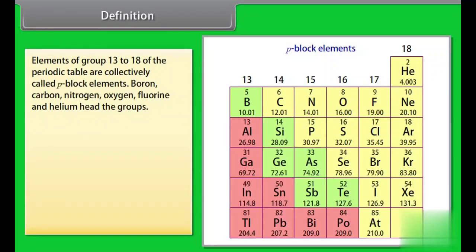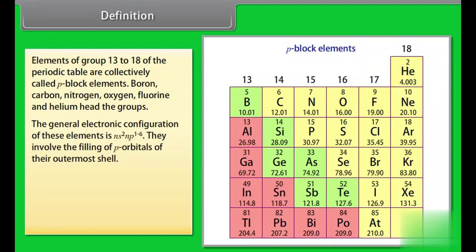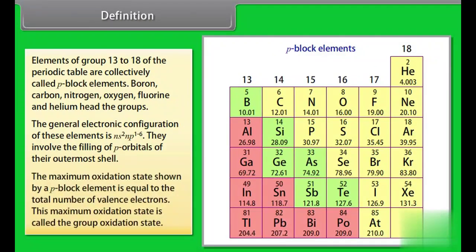Definition. Elements of group 13 to 18 of the periodic table are collectively called p-block elements. Boron, carbon, nitrogen, oxygen, fluorine and helium head the groups. The general electronic configuration of these elements is NS2NP1 to 6. They involve the filling of p orbitals of their outermost shell. The maximum oxidation state shown by a p-block element is equal to the total number of valence electrons. This maximum oxidation state is called the group oxidation state.